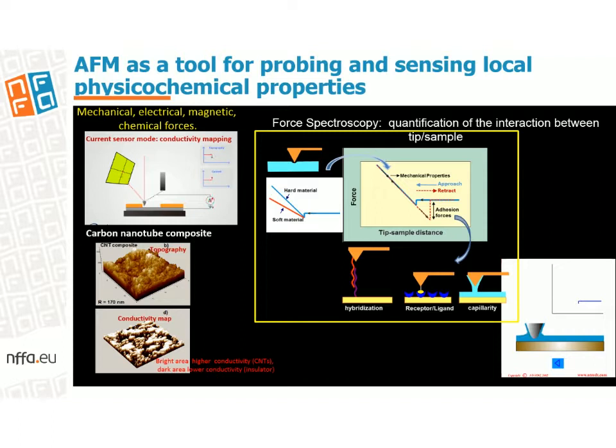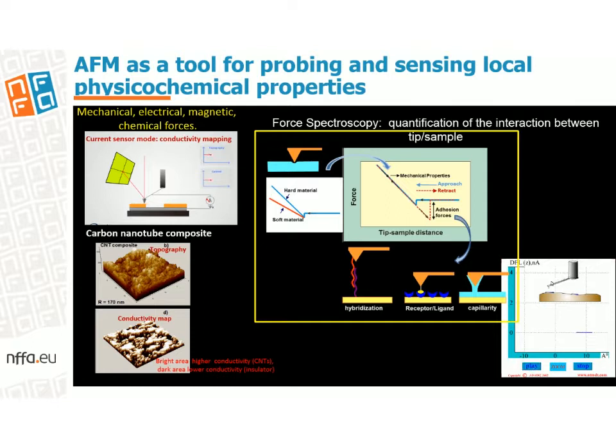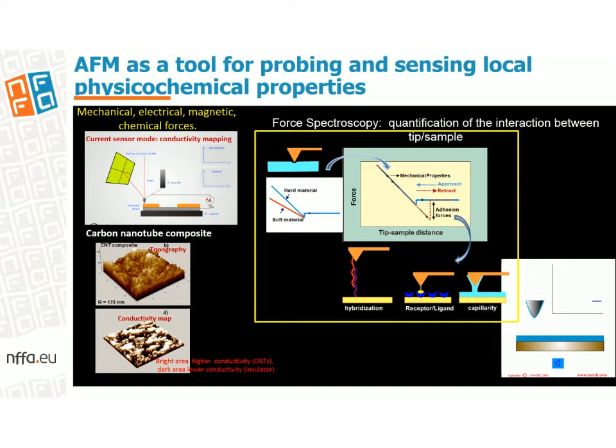Force spectroscopy, which consists in evaluating the forces during tip approach and retraction, allows extracting information of mechanical and adhesive properties. When the tip contacts the sample and presses on it, one can get the mechanical properties of the materials. When the tip is retracted, a hysteresis can appear, since the tip may be stuck to the sample by adhesion forces. Thus, such hysteresis can provide information on hydrophilic-hydrophobic domains, charge interaction, receptor-ligand bindings, acid-base properties, etc.